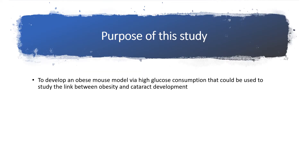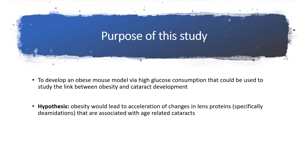The purpose of this study was to develop an obese mouse model via high glucose consumption that could be used to study the link between obesity and cataract development. Our hypothesis stated that obesity would lead to acceleration of changes in the lens proteins, specifically through deamidation, that are associated with age-related cataracts.